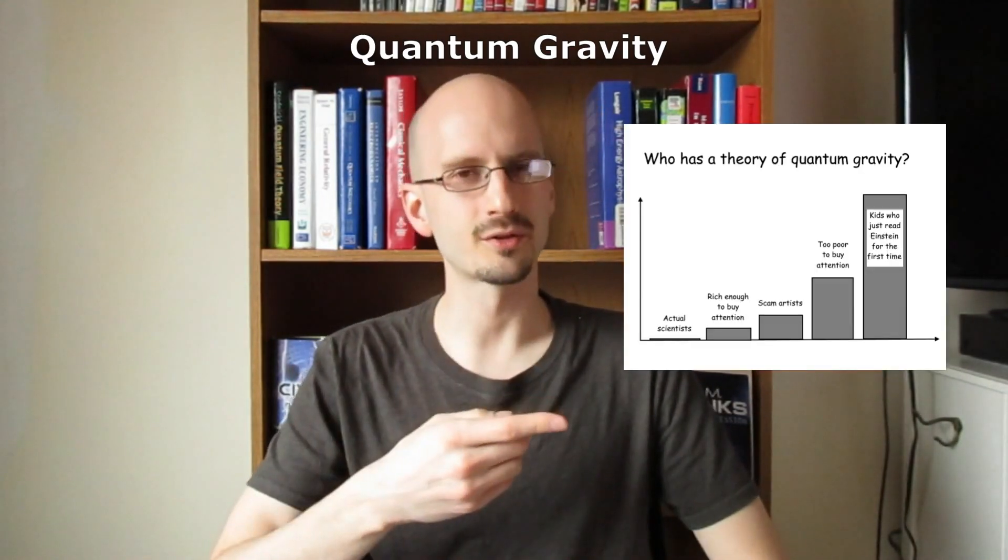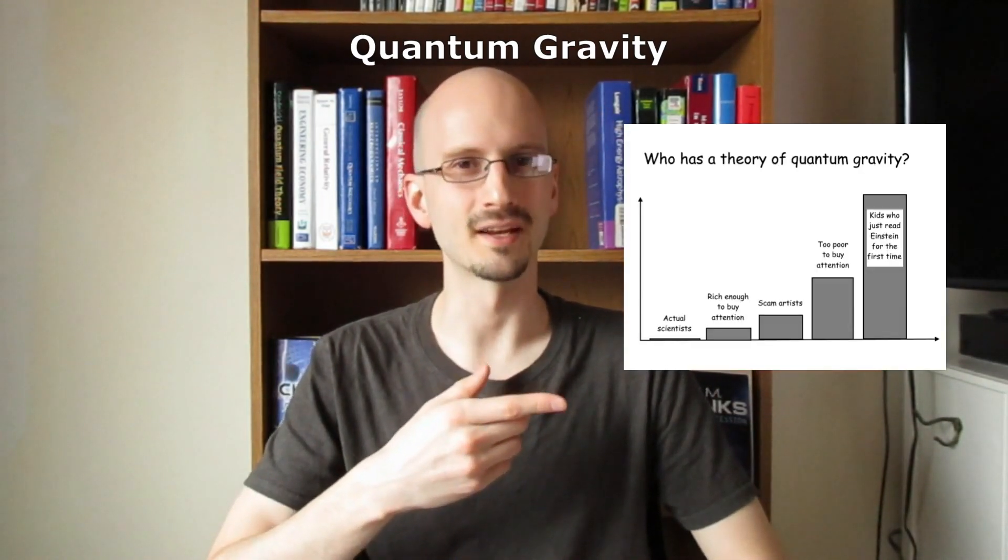The problem isn't that we're scratching our heads waiting for someone to come up with a theory. The problem is that we have way too many theories, and most of them aren't good. This Pareto chart can give us an idea of the state of the issue. We do have two major legitimate contenders.